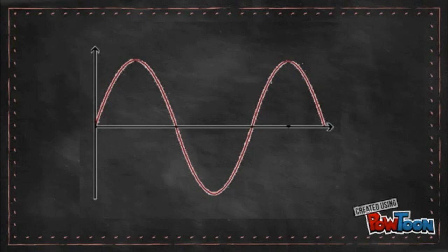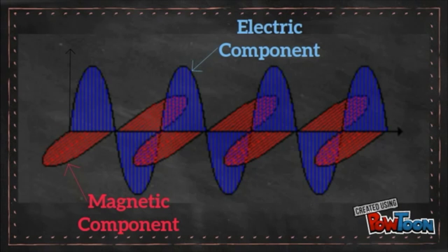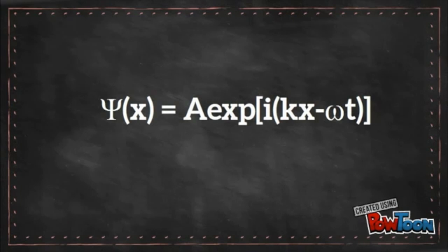These are transverse waves, so the wave displacement is perpendicular to the direction of propagation of the wave. EM waves are formed of two components, an electric and a magnetic component, oscillating in planes perpendicular to one another. EM waves can be described using the standard wave equation.